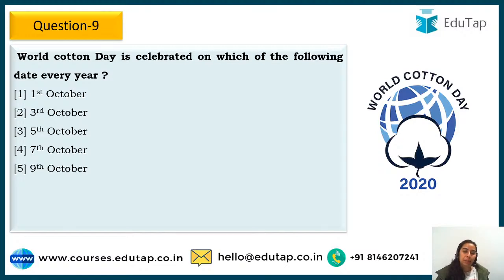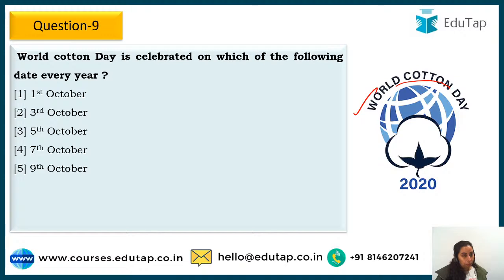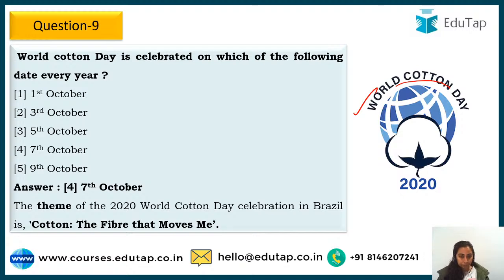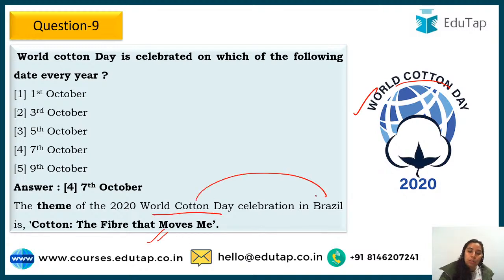Question 9: World Cotton Day — when is it celebrated? Just 2-3 years ago we started observing World Cotton Day. The answer is 7th October. The theme for World Cotton Day is 'Cotton — the fibre that moves me.' This time it was observed in Brazil.